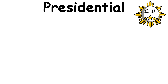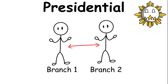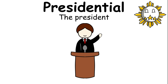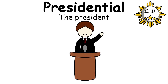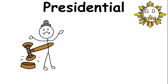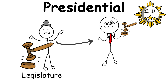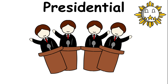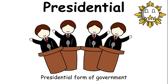In a presidential form of government, there is a separation between the different branches of the government, allowing the executive branch to have separate roles from the legislature. The president is the head of the executive branch and is tasked with the execution of the laws. Meanwhile, the legislature is the branch that is responsible for the enactment of the laws. Presidential governments can arise from republics and democracies, and most democratic republics have a presidential form of government.